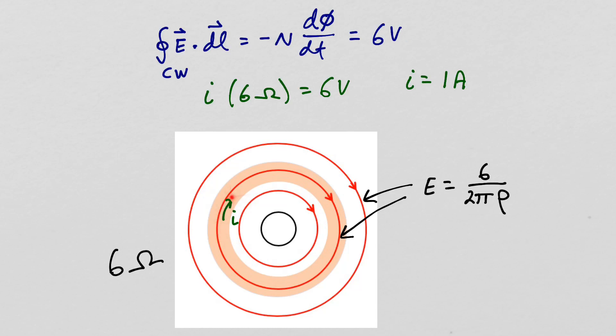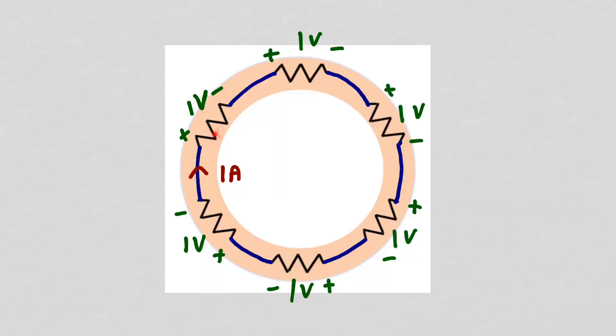Let's model our ring as a series of distributed resistors. Here is such a model where I've used 6 one-ohm resistors in a ring. We found that we have 1 amp flowing so the voltage drop across each one of these resistors will be 1 volt.